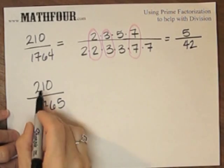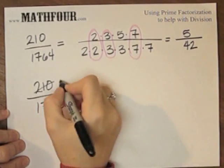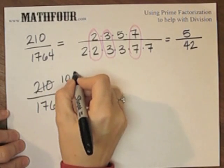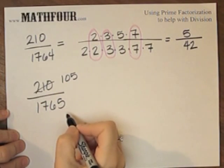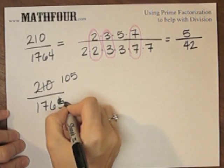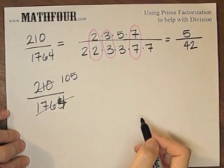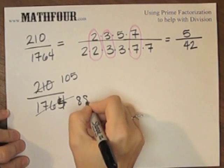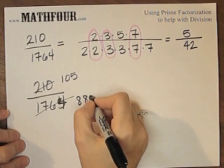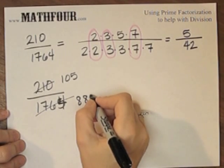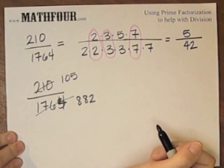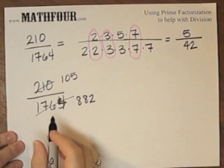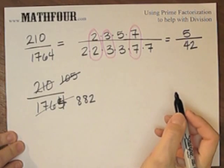I would say 2 goes into 210 105 times and 2 goes into 1764... would be helpful if I write the correct number, wouldn't it? 2 goes into 1764, 882, and then proceed that way.